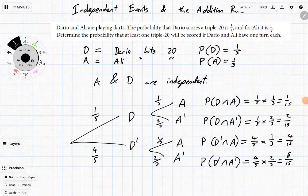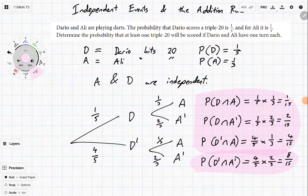So, we've worked out all of these probabilities. Now, we need to see what's the probability that at least one triple 20 will be scored. Well, these three are the events in which at least one is scored. This is the only event in which no triples are scored, because they both miss it. So, let's add up all of those together.